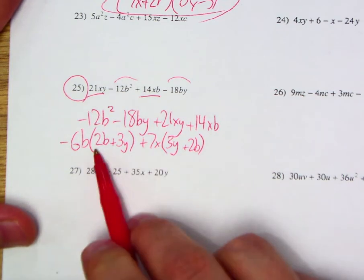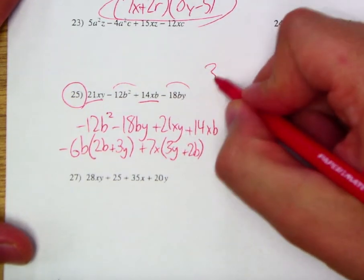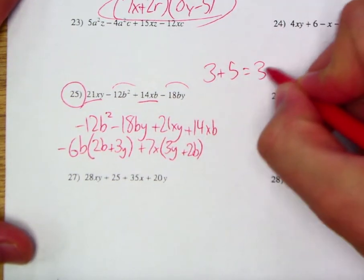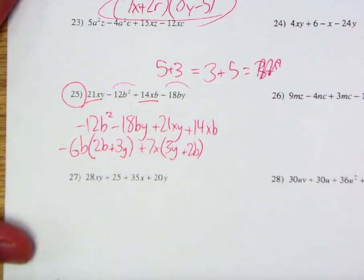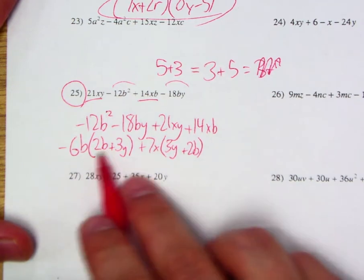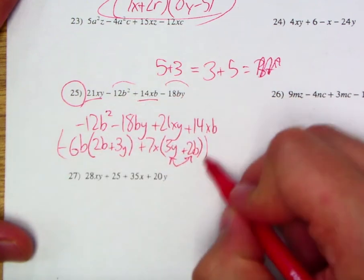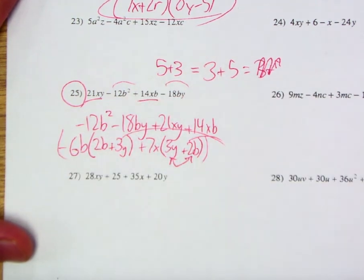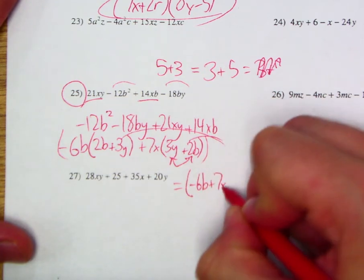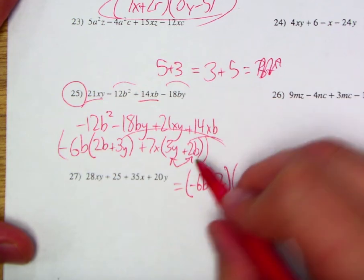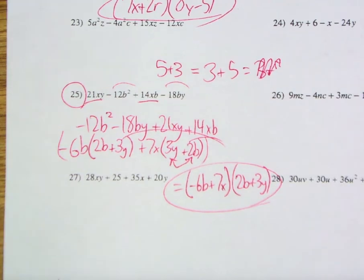Now, some of you may look at that and go, wait, didn't we make a mistake somewhere? I mean, these don't match up. Well, no, because as we know, we can simply rearrange the order. We can simply rearrange the order of terms. 5 plus 3, 3 plus 5. It doesn't matter how we choose to add these. So if I flip those, all of a sudden they look similar, and now I can factor that binomial out of each, and I would be left with quantity negative 6b plus 7x, and the quantity, we'll flip this one, so we'll have a 2b plus 3y. So there's our factored form.